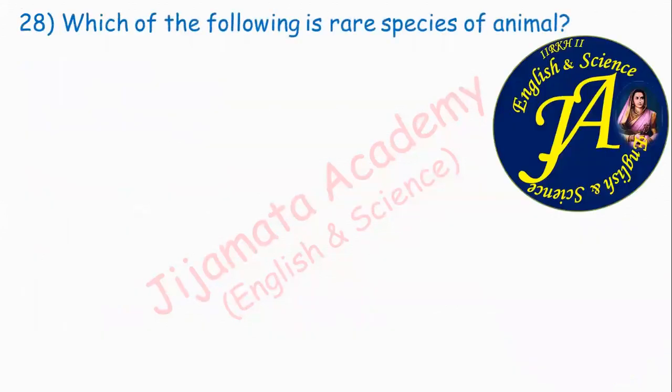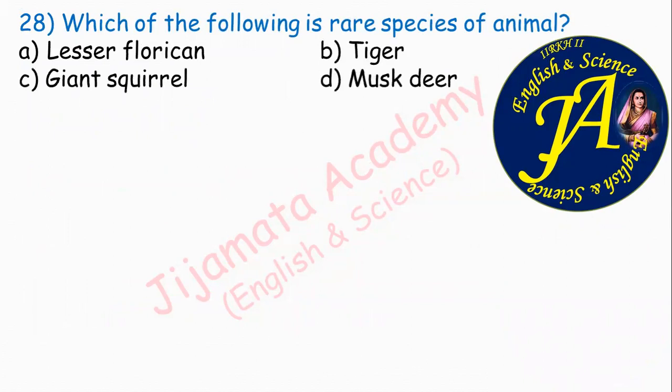Which of the following is a rare species of animal? Options are florican, tiger, giant squirrel, musk deer. Option D: musk deer is the correct answer as a rare species.